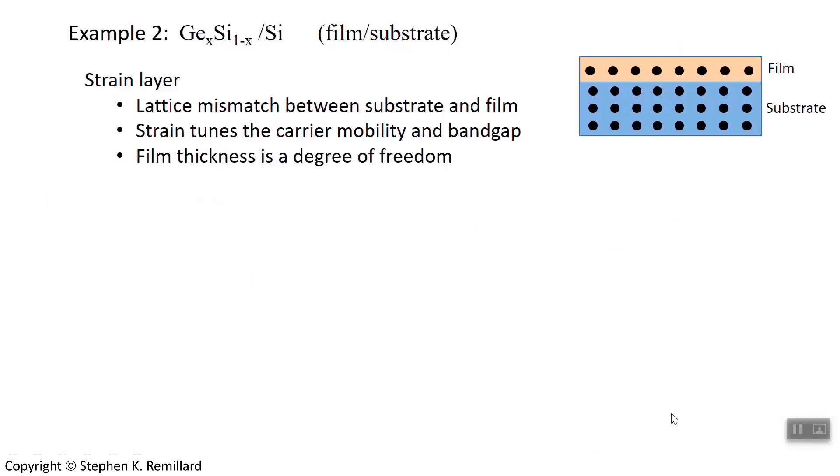The second example is germanium silicide on a silicon substrate. You start with a silicon substrate, expose it to germanium vapor, and you get germanium silicide grown as a thin film on top of the silicon substrate. X tells you how much germanium and how much silicon you have in that film. We're using a strain technique here, so the thin film forms a strain layer. The lattice of germanium silicide doesn't match the lattice of pure crystalline silicon substrate, so there's a strain put on the film. Strain affects the bandgap.